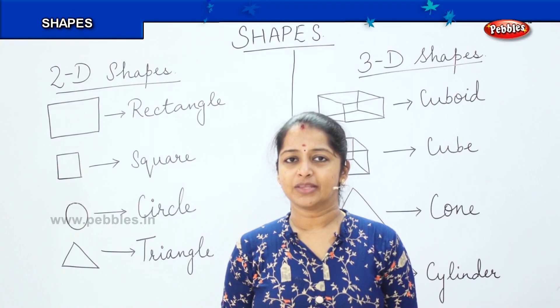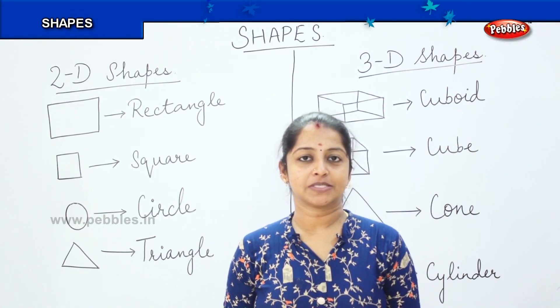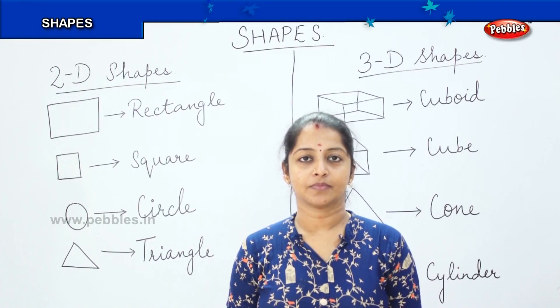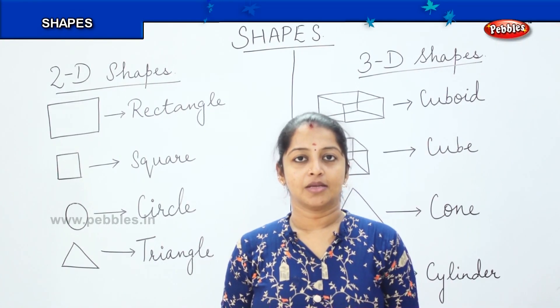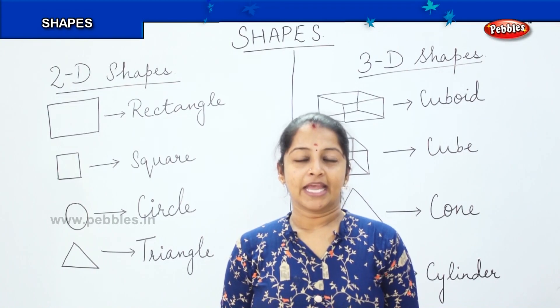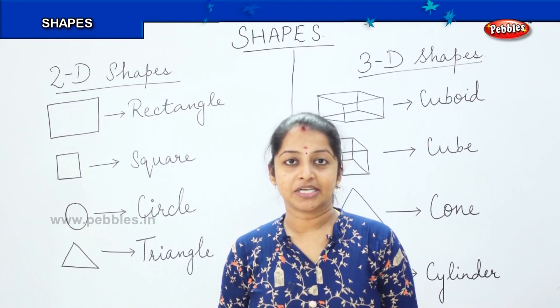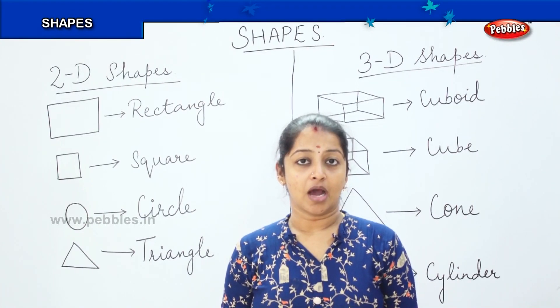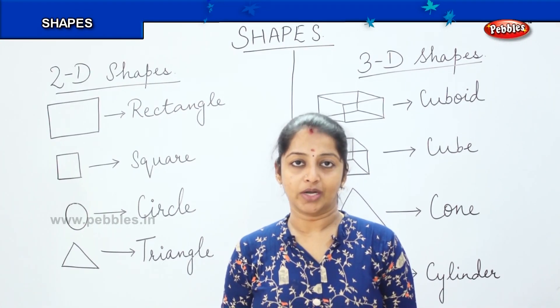So have you ever thought why there are different shapes around us? Can you tell me a reason? Yes. Every shape cannot be the same, right? Can you see a door in a triangle shape? Will it look nice? Or can you see a house in a circle shape? Will it look nice?